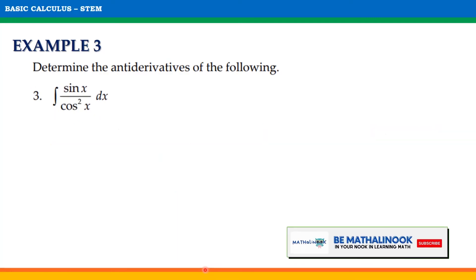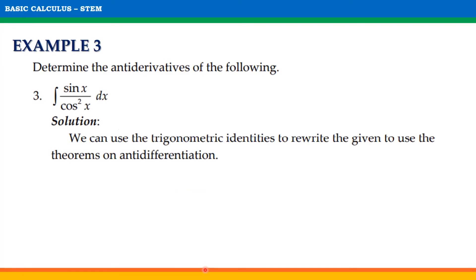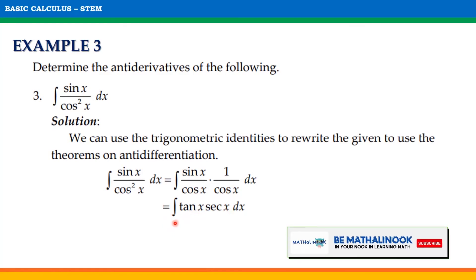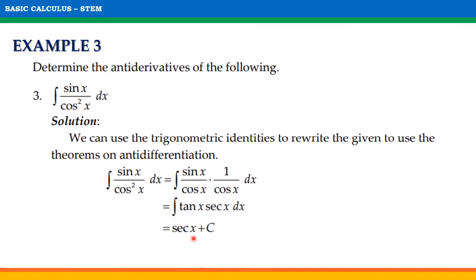For our last example, solve for the indefinite integral of sine x over cosine squared x with respect to x. Again, we can use trigonometric identities to rewrite the given. Our given can be written as the indefinite integral of sine x over cosine x times 1 over cosine x with respect to x. Remember that sine x over cosine x is equal to tangent x, and 1 over cosine x is equal to secant x. Thus, our given becomes the indefinite integral of tangent x times secant x with respect to x. From here, we can now apply the theorem. Therefore, the answer is equal to secant x plus C.